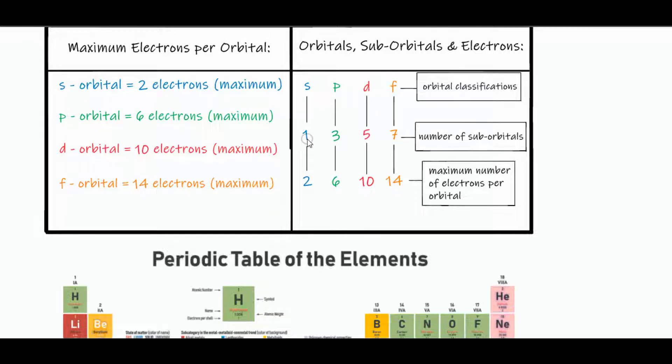And that's the number of sub-orbitals per orbital classification. All you do is multiply each number of sub-orbitals times 2, and then you can decipher the maximum number of electrons per orbital very, very easily.